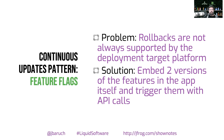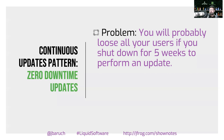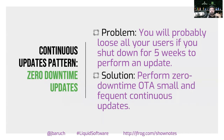The last example is MoviePass, which shut down for several weeks to update their apps. That doesn't make any sense. Instead of several weeks, we want zero-downtime updates — by the time you come back from five weeks of downtime to perform an update, you won't have any users waiting. That's exactly what happened to MoviePass: after several weeks of updates they came back to find no users and went out of business. You want to strive for zero downtime, over-the-air, small and frequent continuous updates.